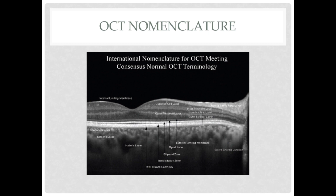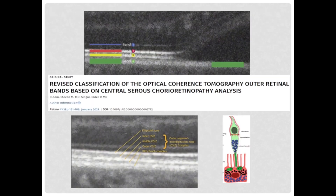Then it is the inner nuclear layer, outer plexiform, outer nuclear layer, and the hyperreflective layer is the external limiting membrane. At the outer retina, there are four hyperreflective layers. They can be called as band 1, 2, 3, and 4.